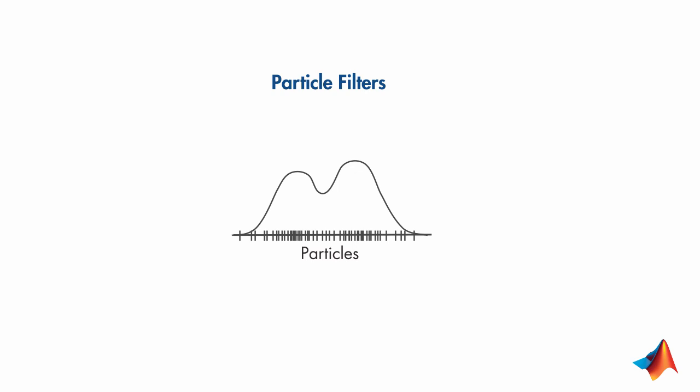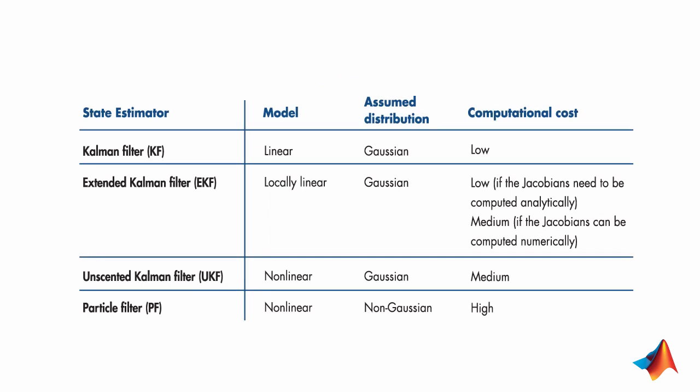For comparison, here are the properties of the filters that we've discussed so far. A Kalman filter only works on linear systems. For state estimation of nonlinear systems, you can use an EKF, UKF, or PF.